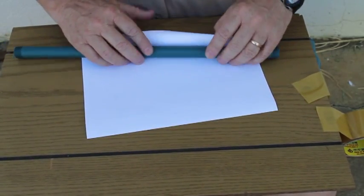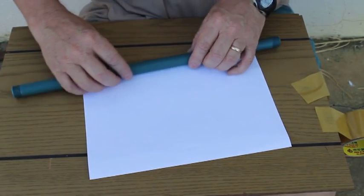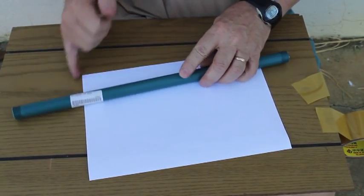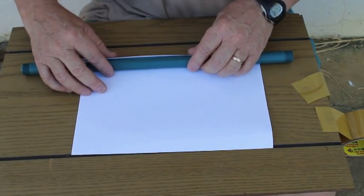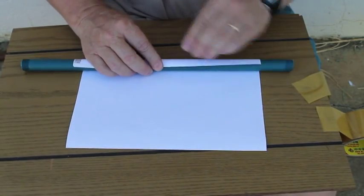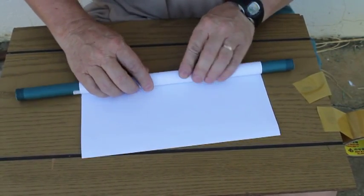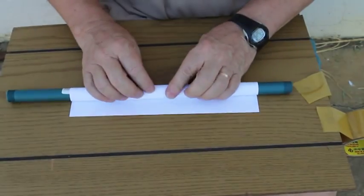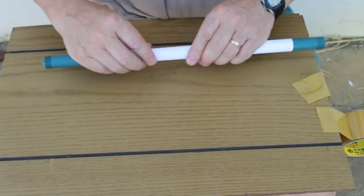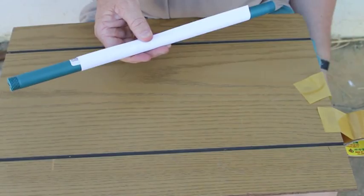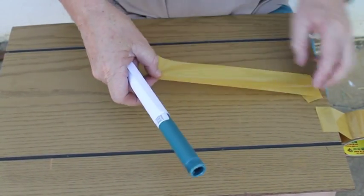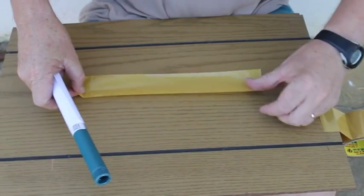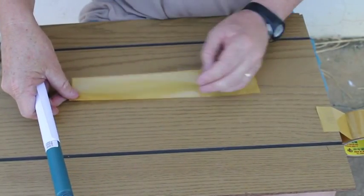Then you simply take the sheet of paper, just roll it in the pipe, around the pipe, and get it nice and straight on the ends, and then simply stick this on.